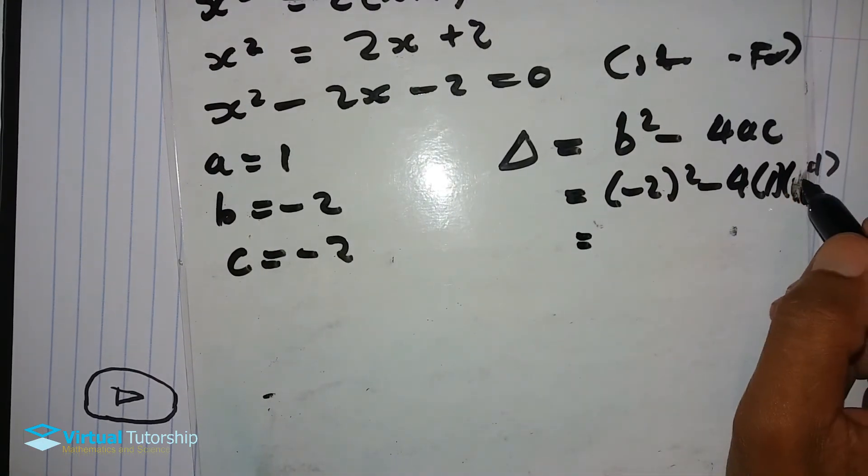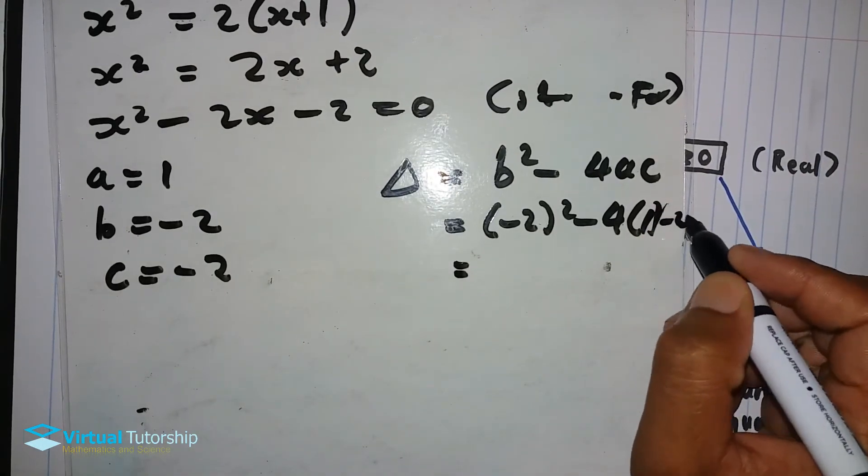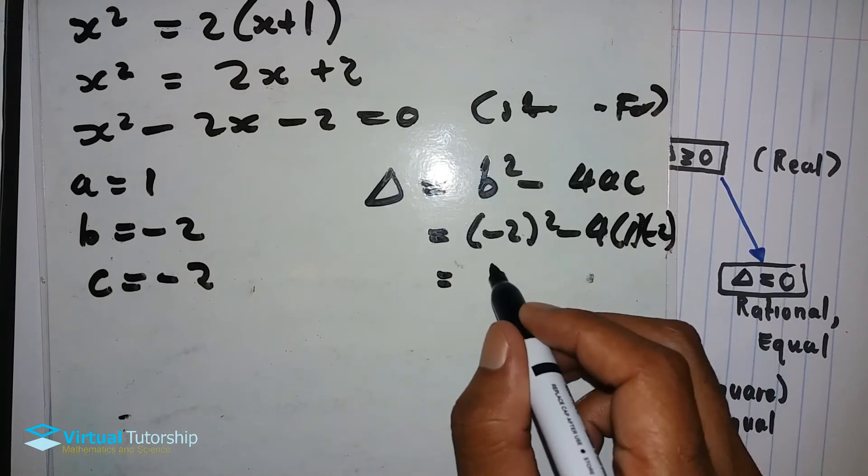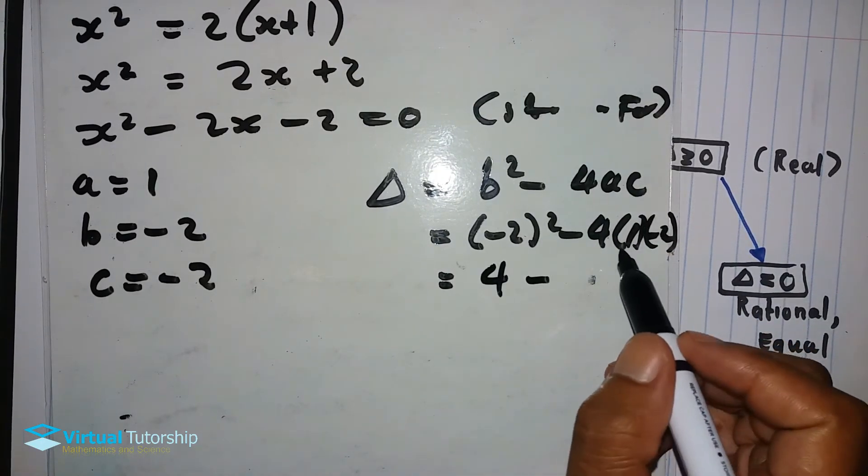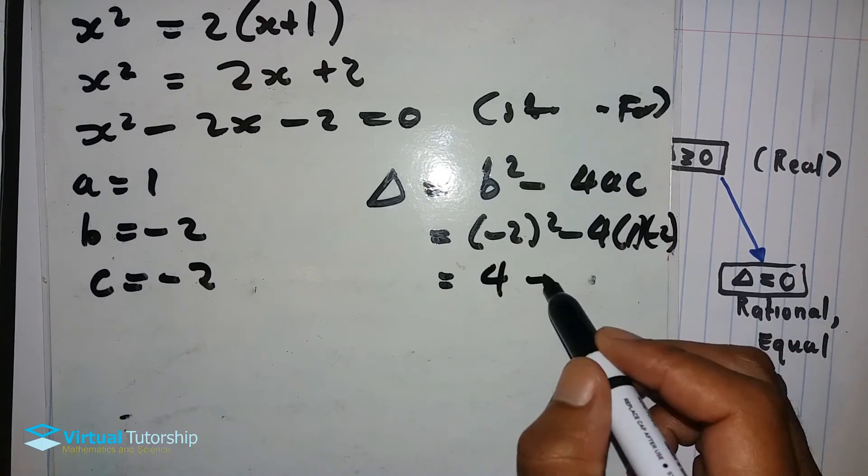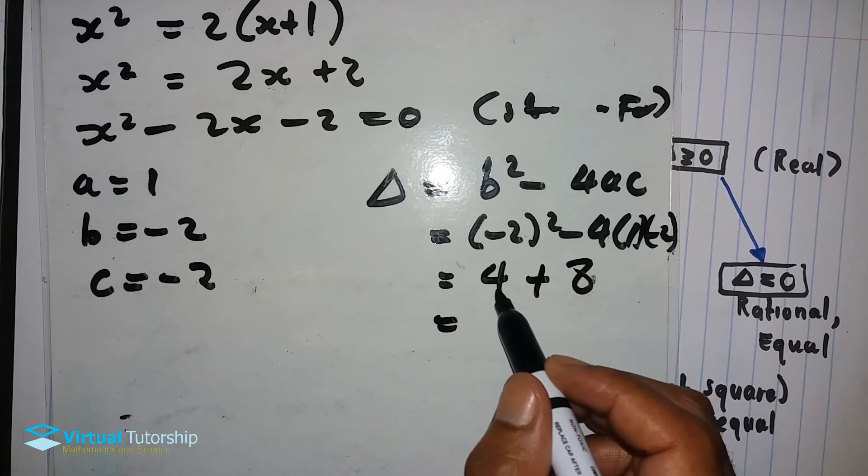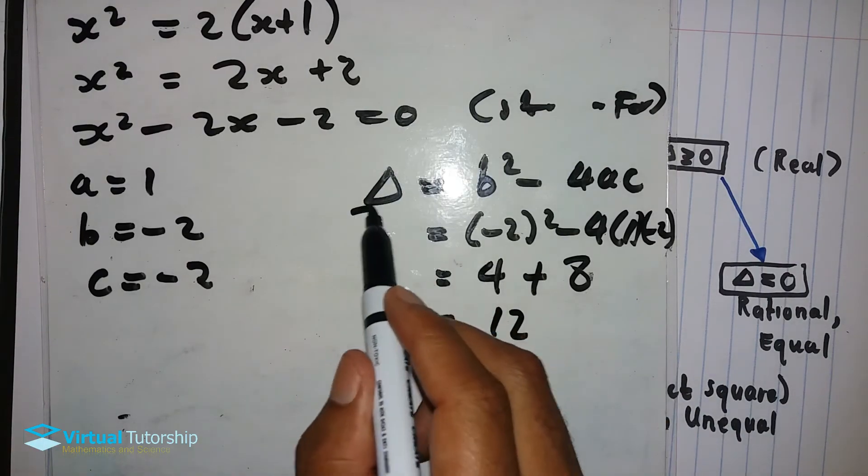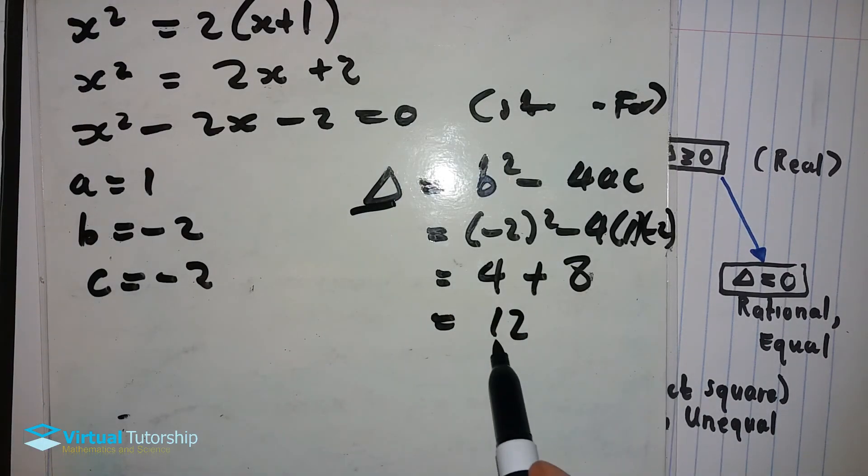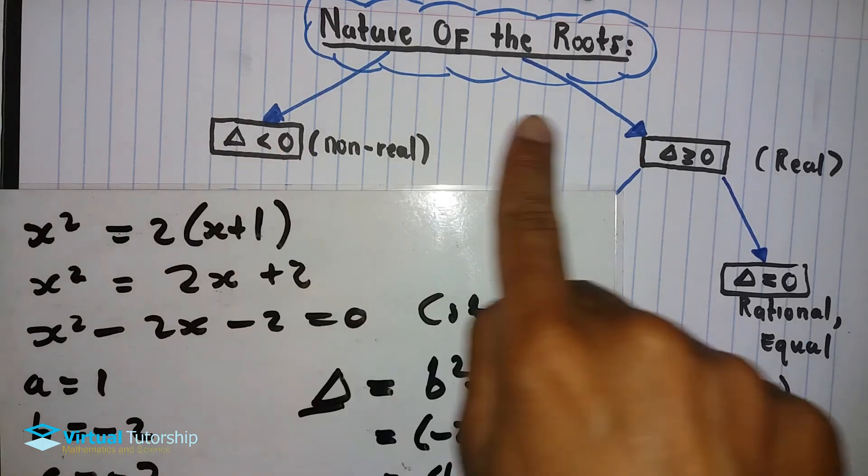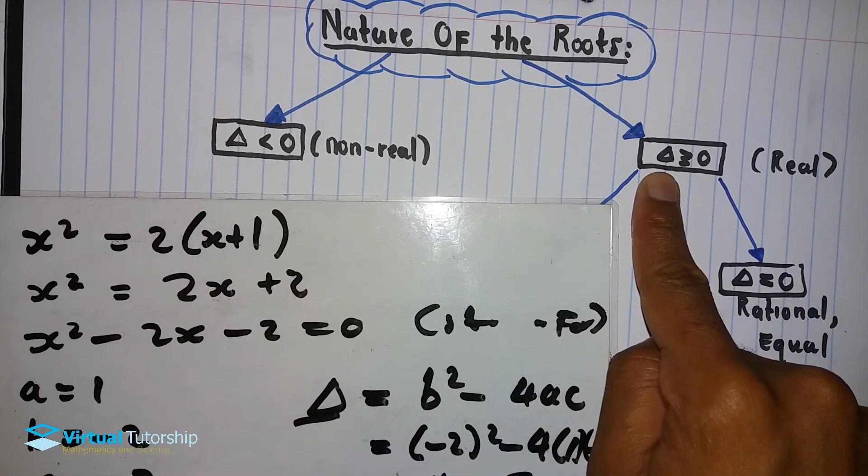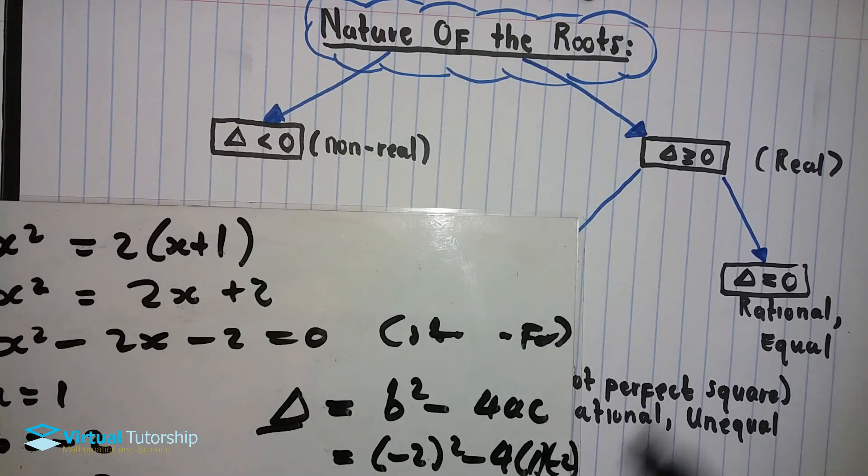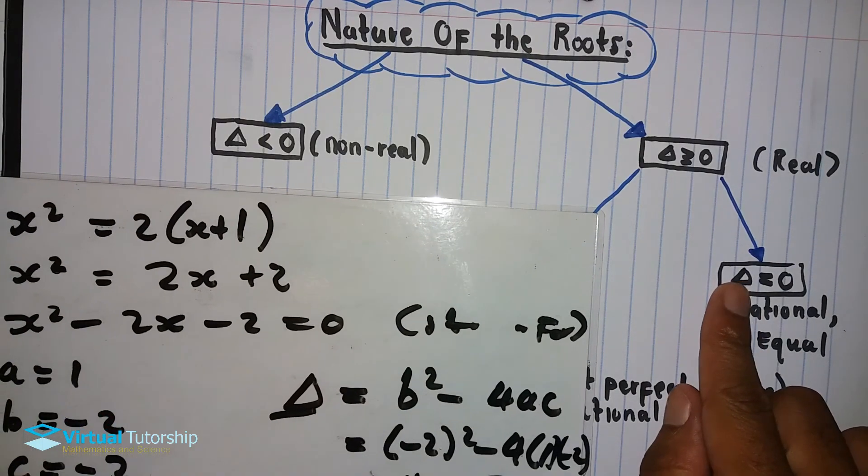Minus 2 squared in total is 4, minus 4 times 1 times minus 2 is plus 8. So 4 plus 8 in total equals 12. The delta is equal to 12. The delta is greater than zero, so it's gonna be real. And the delta is not equal to 0, so we're going to the second branch. The delta is greater than 0 but is not a perfect square.